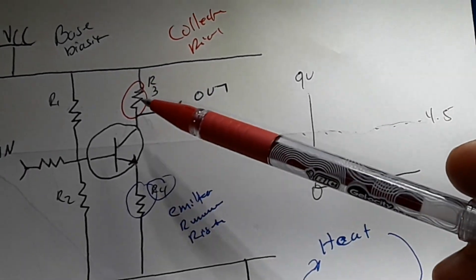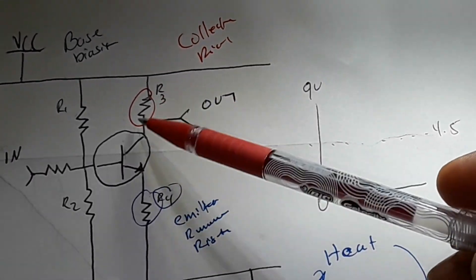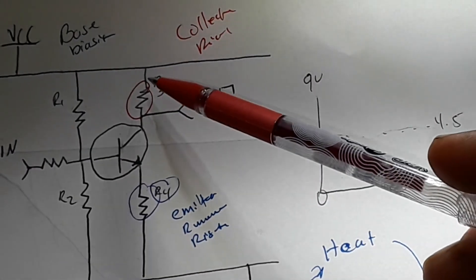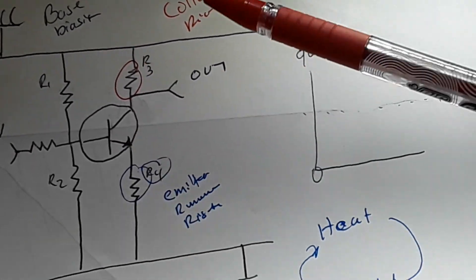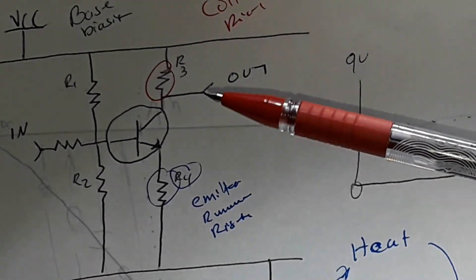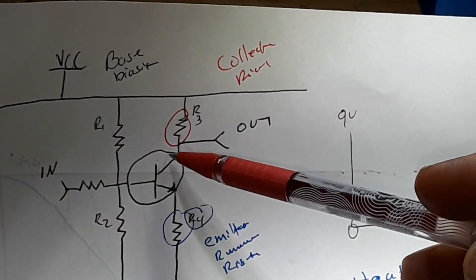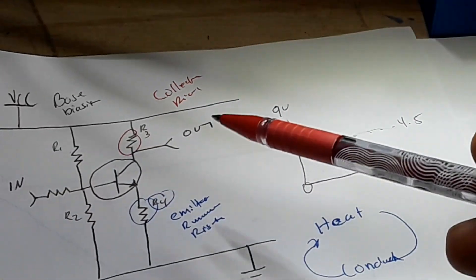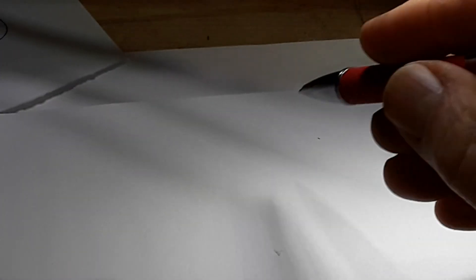All right, and that gets us down to resistor three, our collector resistor. For that we need to go to the data sheet and we want to find out what the max collector current is and we want to go under that range. Now there's a lot of math going into picking this particular resistor when you're using it as an amplifier.